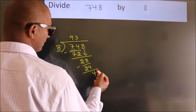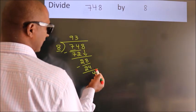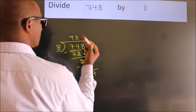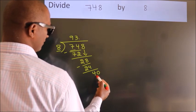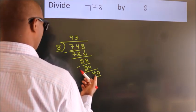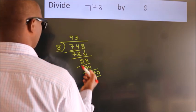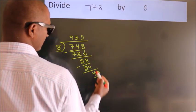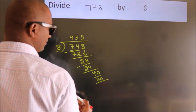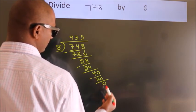After this, no more numbers to bring down. So what we do is put a dot and take 0, so 40. When do we get 40 in the 8 table? 8 fives, 40. Now, we subtract. We get 0.